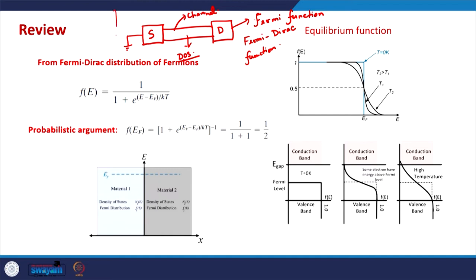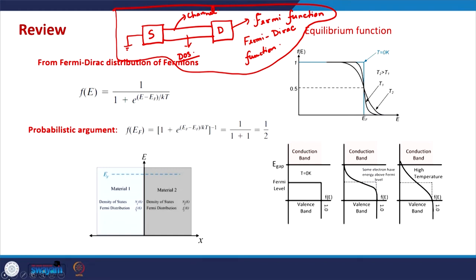These ideas we have tried to understand in good detail in the last few classes, and now we are in a position to apply these ideas in real practical scenarios, which brings us to transport. Let me quickly review the Fermi function. In one interpretation, the Fermi function is the probability that a state is occupied by an electron at a given temperature.